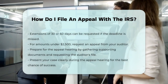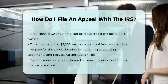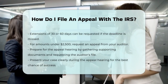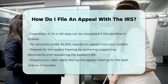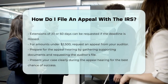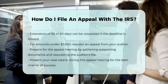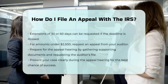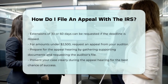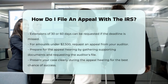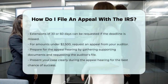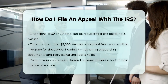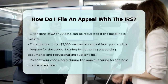After submitting your protest, an appeals officer will be assigned to your case. You'll usually have at least 60 days to prepare for the appeal hearing. Use this time to gather all your documents, including receipts, statements, and other forms that support your case. Request a copy of the auditor's file under the Federal Freedom of Information Act, and organize your documents clearly.